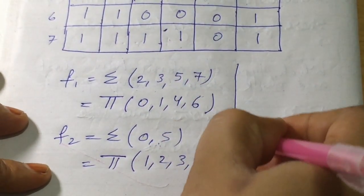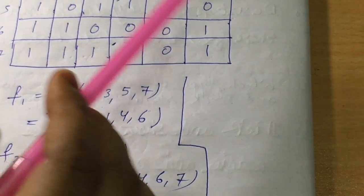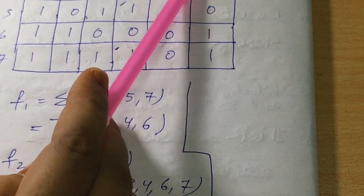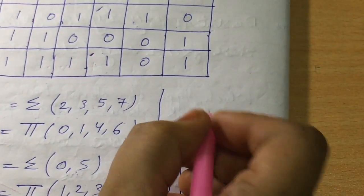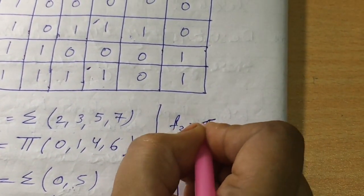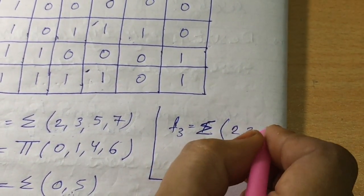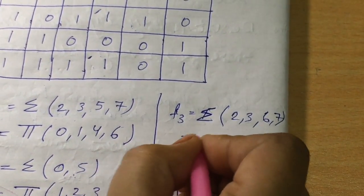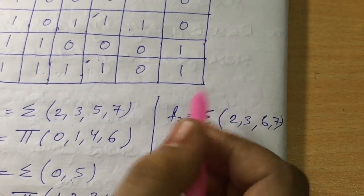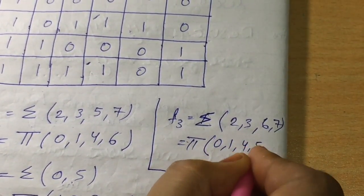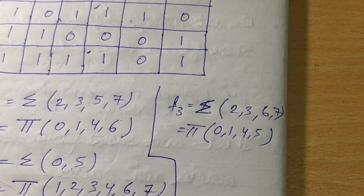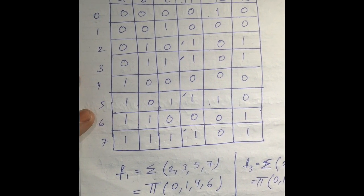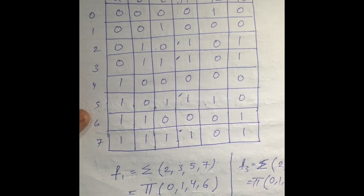For f3, looking at the table, f3 = 1 at rows 2, 3, 6, and 7. So f3 = Σ(2, 3, 6, 7). For the product of sum form, the remaining rows are 0, 1, 4, and 5, so f3 = Π(0, 1, 4, 5). That's all for today — if you like the video, don't forget to hit the like button and subscribe. Thanks for watching!